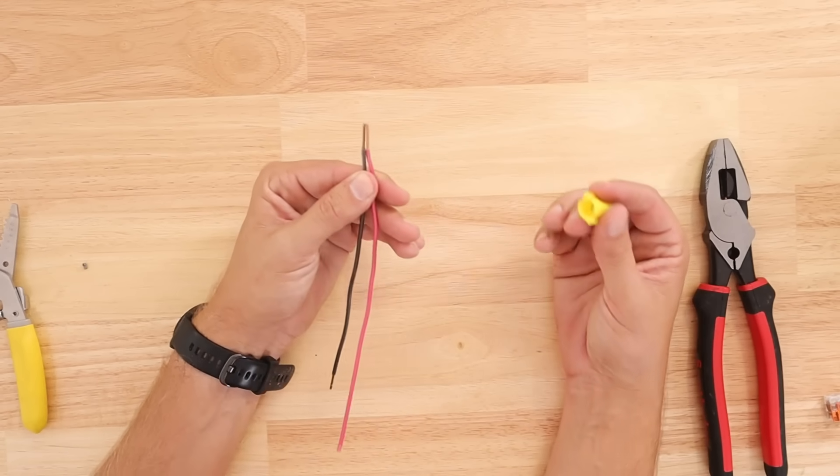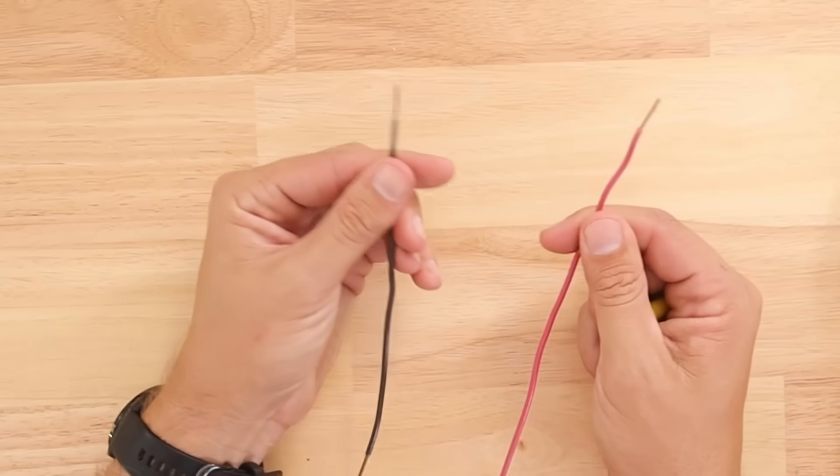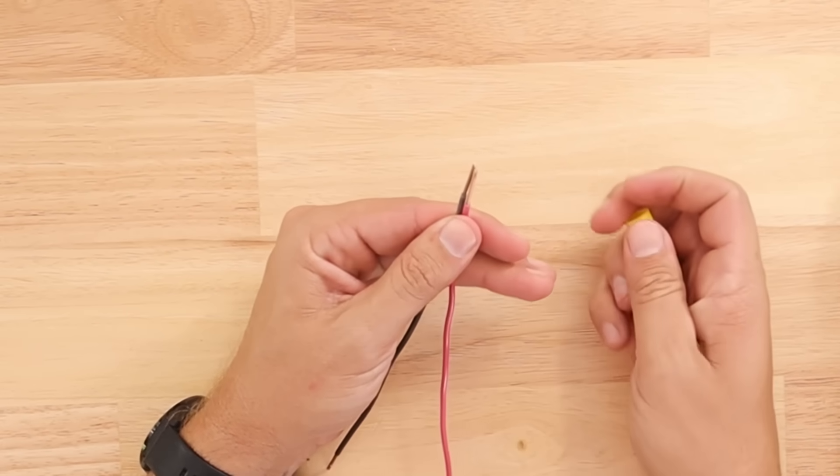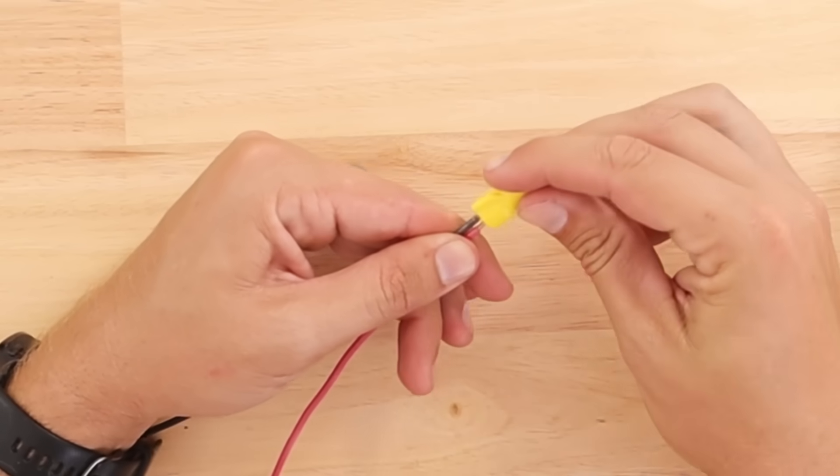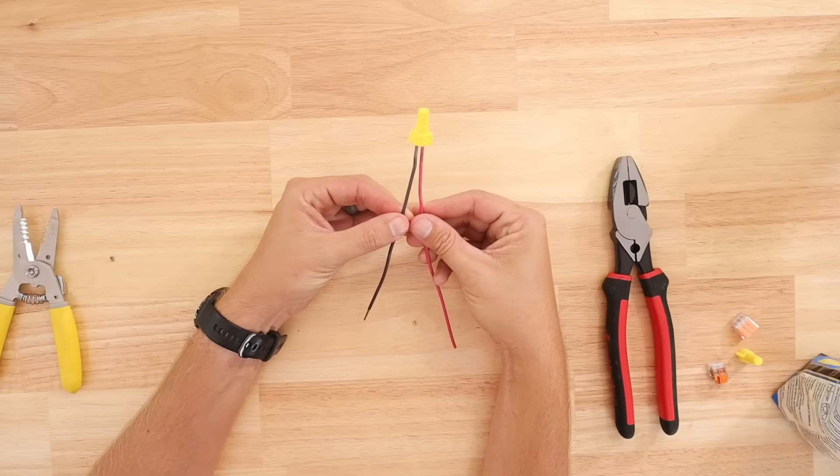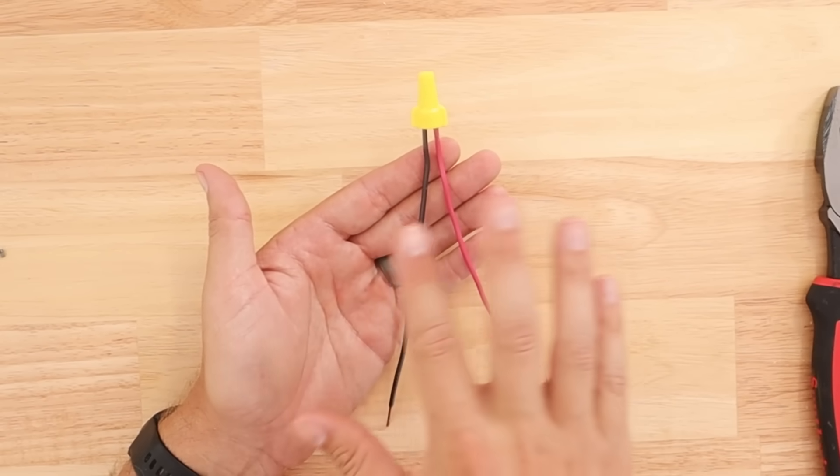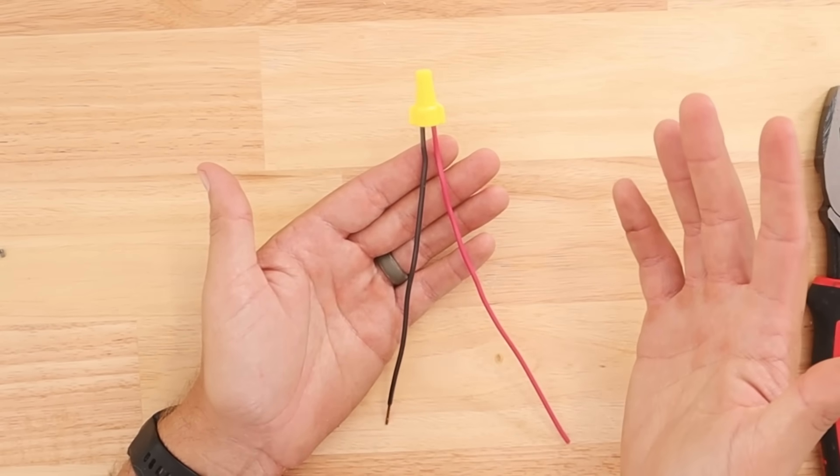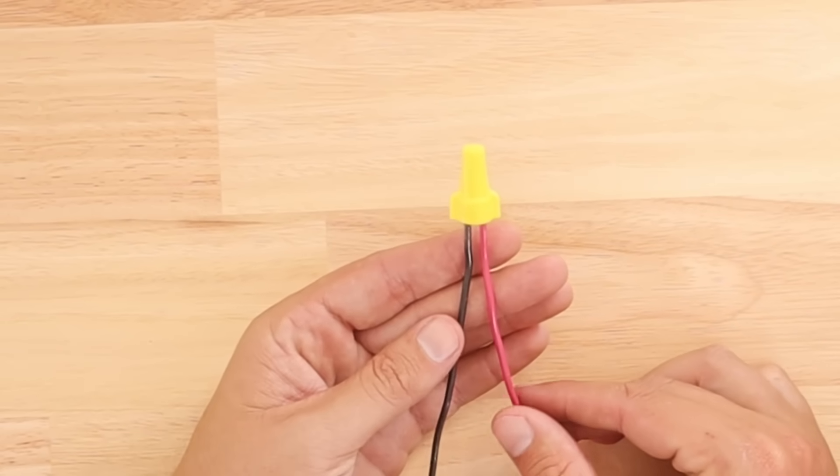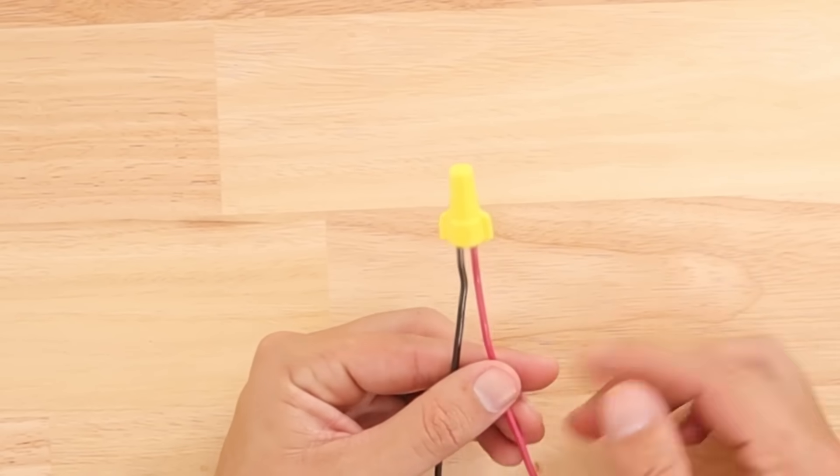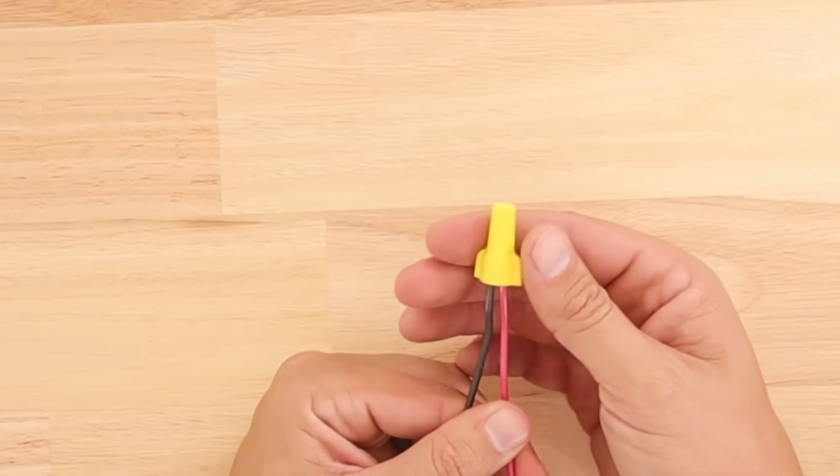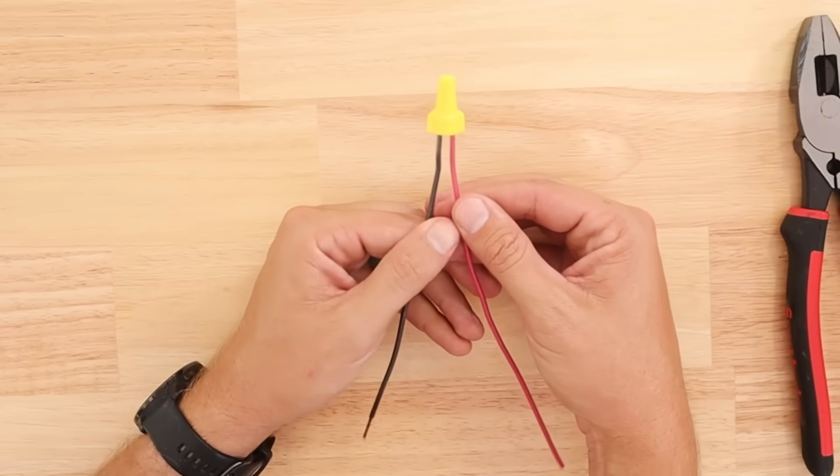So the most common mistake that I see most DIYers make is they'll take their two wires that they're going to be joining together, they'll put them together and they'll just take a wire nut, put it on top and then just tighten it down like so. And then this is where one of the most debatable subjects come into play. I've seen mostly DIYers debating this but I've also seen some electricians debating it as well as far as is this good enough. Is it good enough just to put two wires together and then put a wing nut over the top of it?